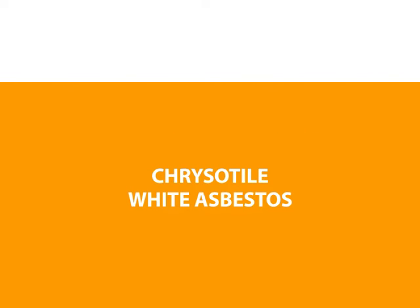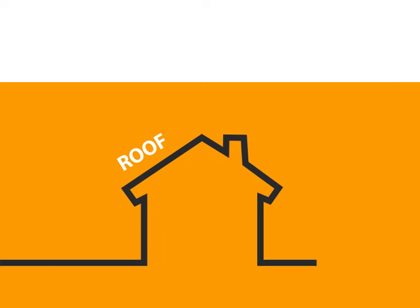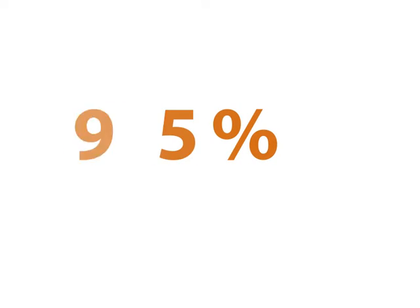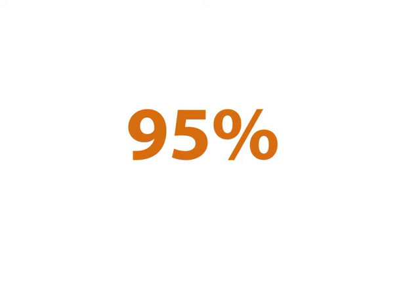Chrysotile, or white asbestos, is the most commonly used form of asbestos and can be found in roofs, ceilings, walls and floors of homes and businesses. More than 95% of all asbestos used around the world was of the chrysotile variety.